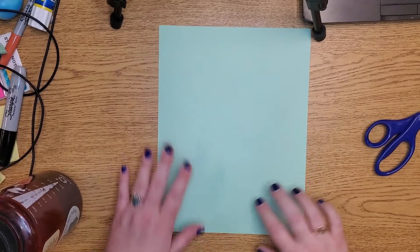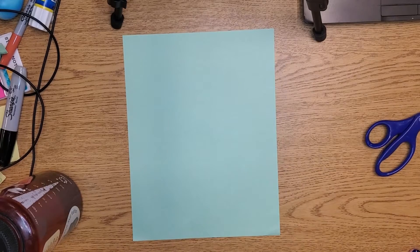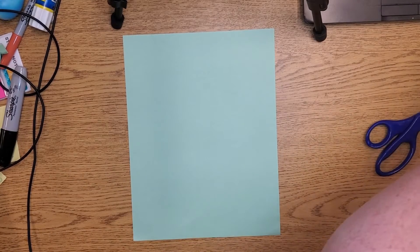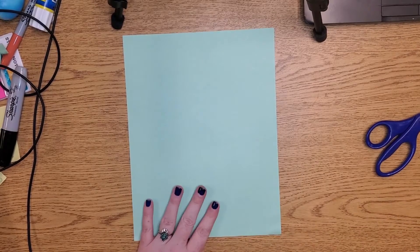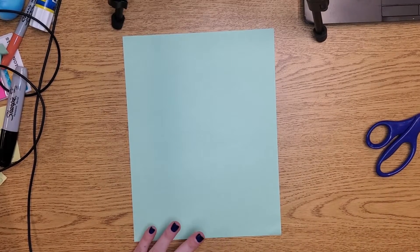Okay friends, so what we're going to make today is a jumping frog. What you're going to need is a regular size sheet of paper, eight and a half by eleven, or notebook paper works perfectly fine for this project.